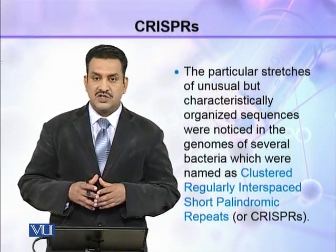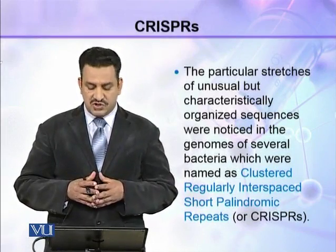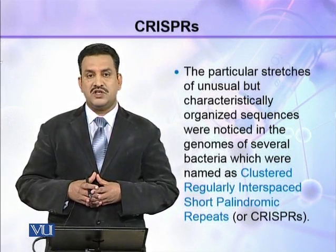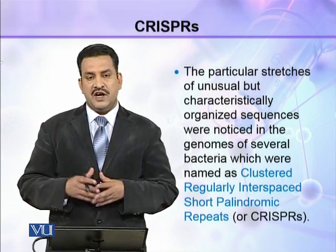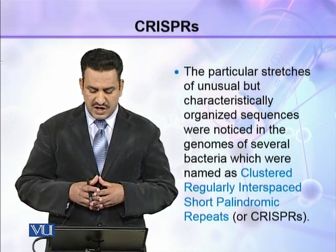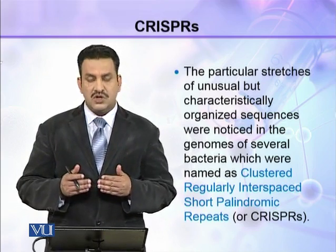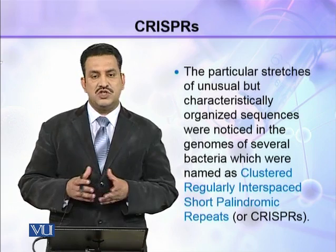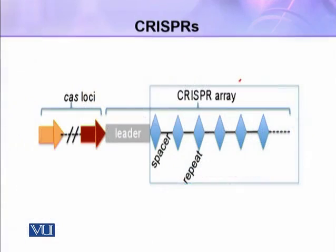Particular stretches of unusual but characteristically organized sequences were noticed in the genomes of bacteria, and these sequences were named as Clustered Regularly Interspaced Short Palindromic Repeats, abbreviated as CRISPRs.